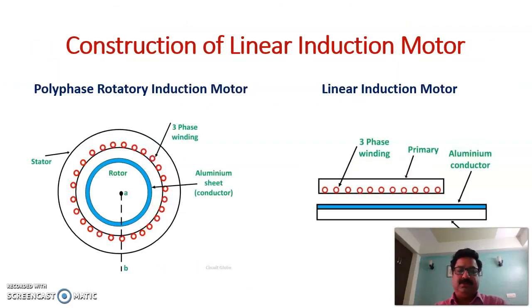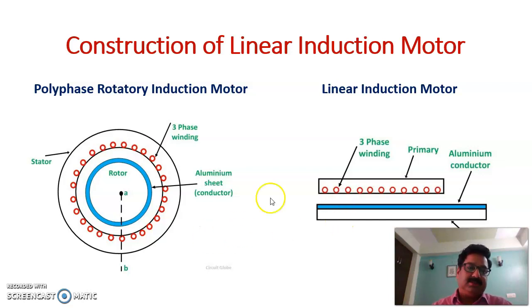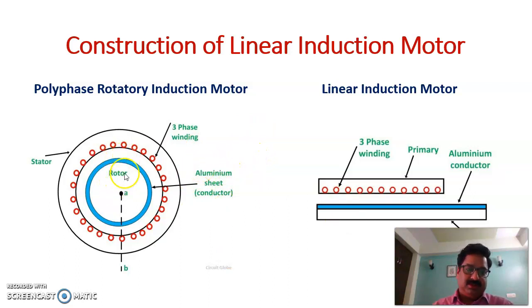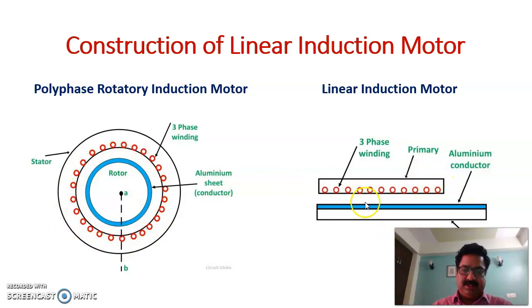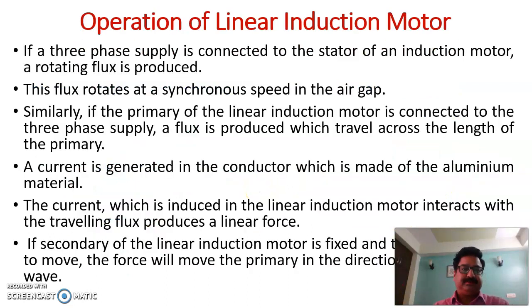Comparing the construction of a polyphase rotary induction motor with a linear induction motor: in the rotary motor, the stator and rotor are circular, with an aluminium sheet conductor and three-phase windings. In the linear induction motor, similarly there is a primary with three-phase windings and an aluminium conductor, but instead of a circular shape, it is in a flat shape.